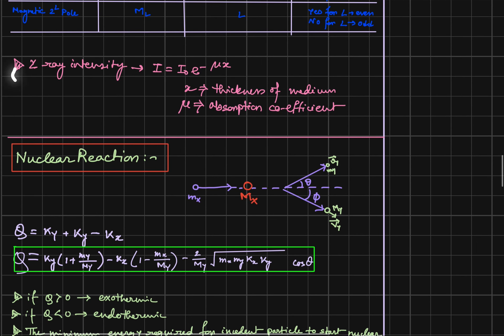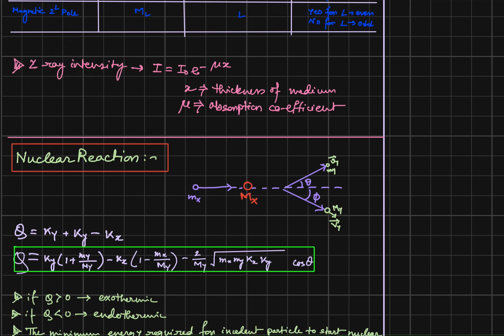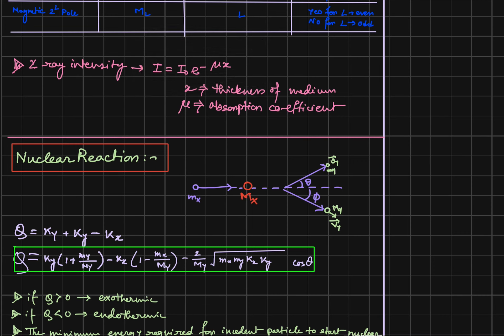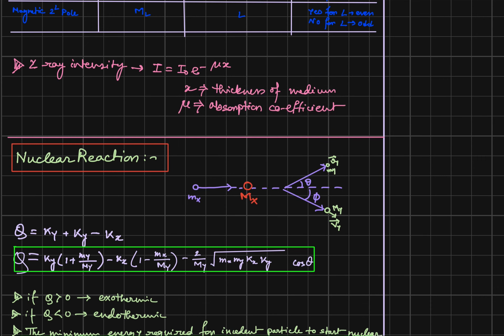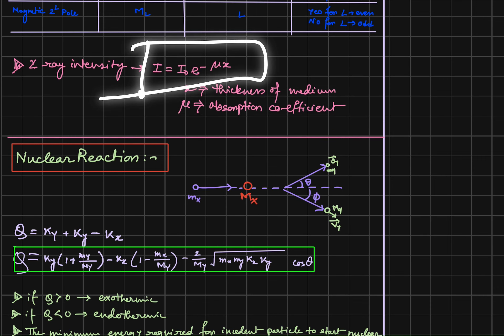The gamma ray intensity when passing through any material is I = I₀ × e^(−μx), where x is the thickness of the medium and μ is the absorption coefficient. Very simple formula.